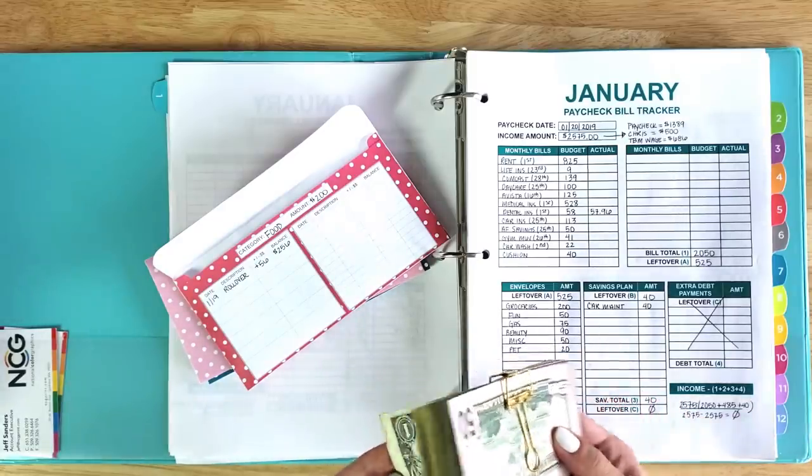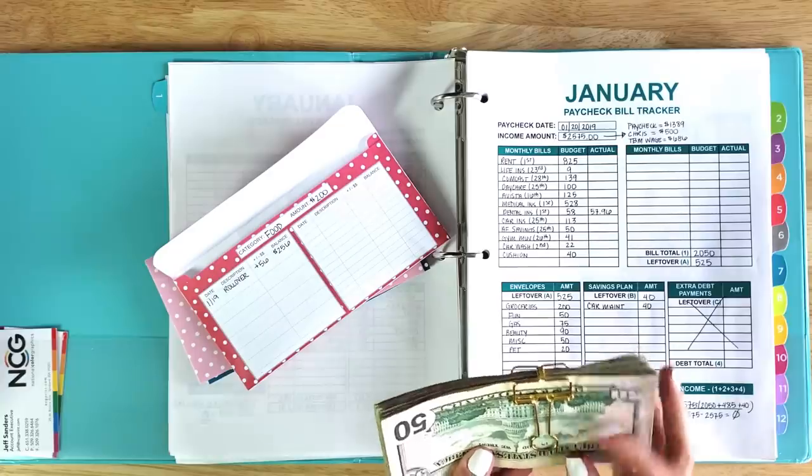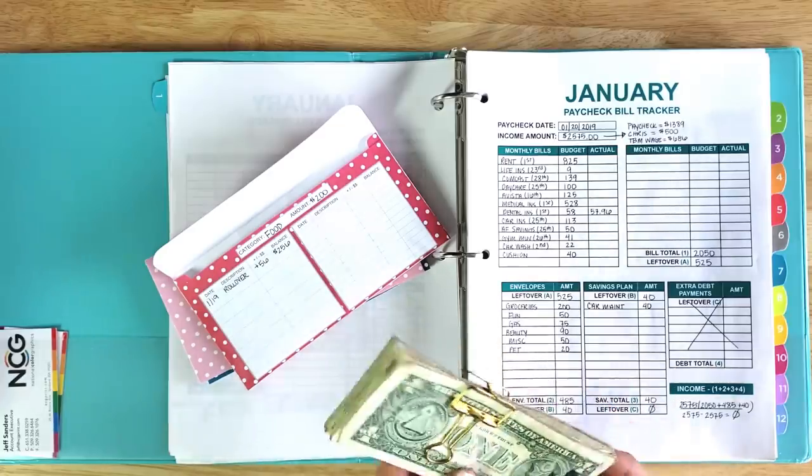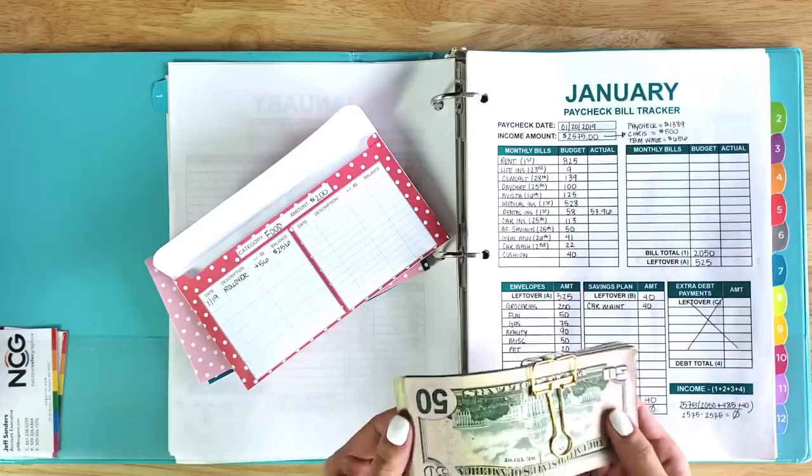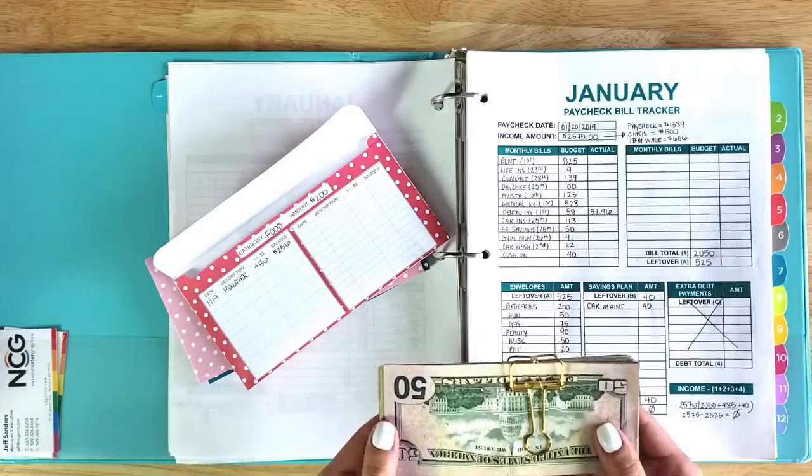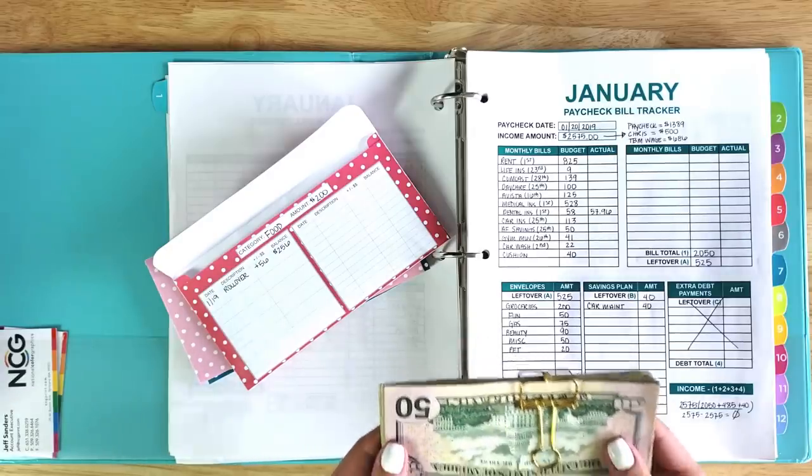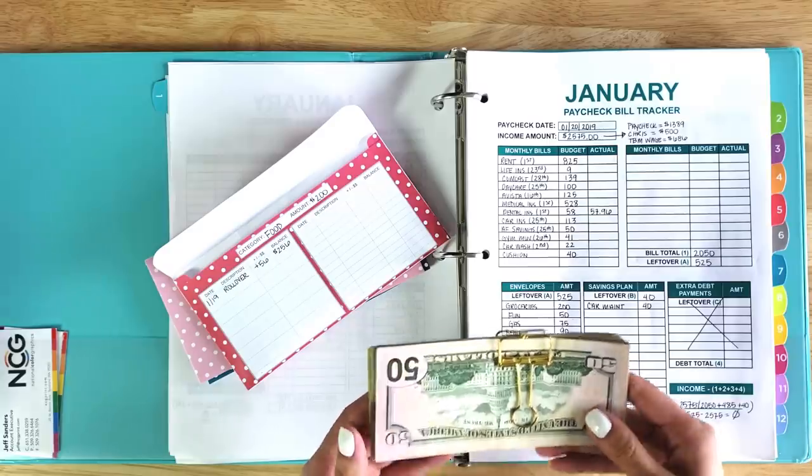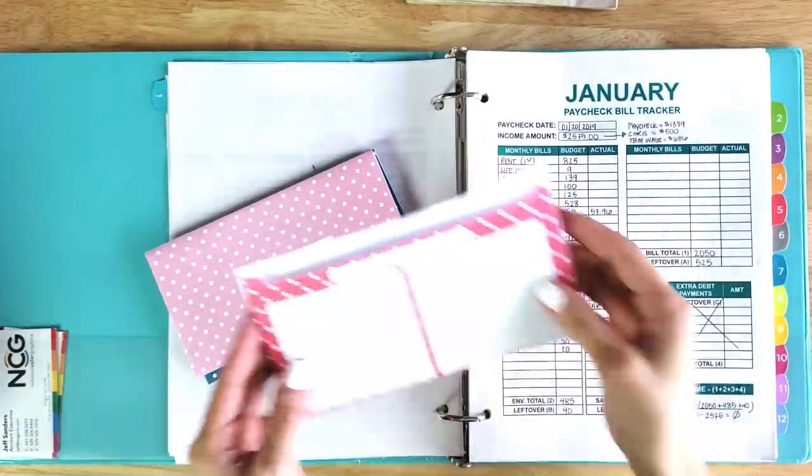It just means that you're challenging yourself to save more of the budget amount that you put for your categories. This is all cash that I've saved since my December 20th paycheck. I'll be running down to the bank and I've decided to use this money that I've saved to put towards my house savings account. That's how I handle my rollover.